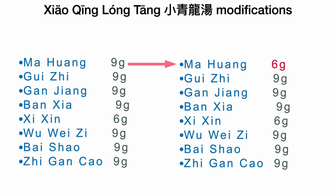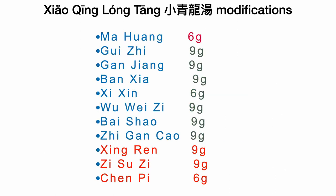For my patient, I had to modify this formula slightly. First, I used only 6 grams of Ma Huang because my patient is 84 and I wanted to make sure ephedra would not challenge his heart. Since cough was a significant symptom, I added 9 grams of Xing Ren — apricot seeds — to stop cough and wheezing, and 9 grams of Zi Su Zi — purple perilla fruit — an acrid and warm herb that treats cough and wheezing and reduces phlegm. I also added 6 grams of aged tangerine peel — Chen Pi — to assist Ban Xia and Zi Su Zi in transforming phlegm.